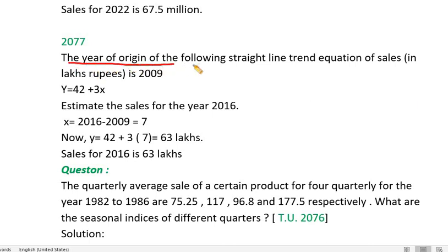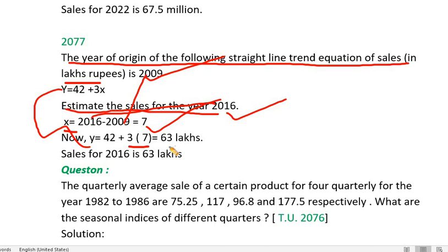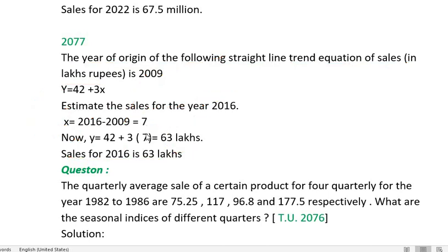The year of origin of the following straight-line trend equation — sales in lakh rupees — is 2009. Estimate the sale for the year 2016. Using x equals 2016 minus 2009, x equals 7. With the equation y equals 42 plus 3x, the sale for 2016 is 63 lakhs.